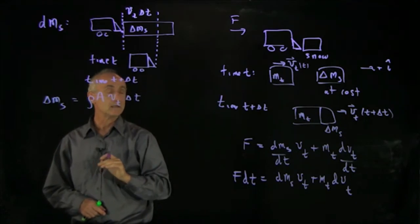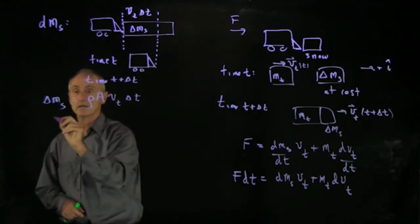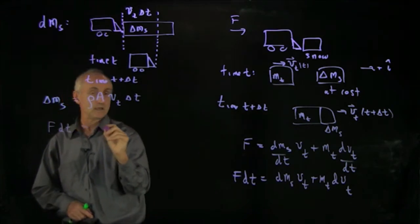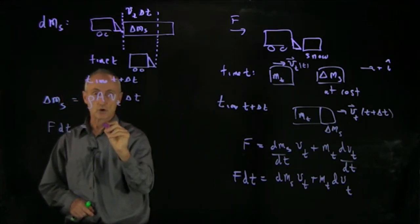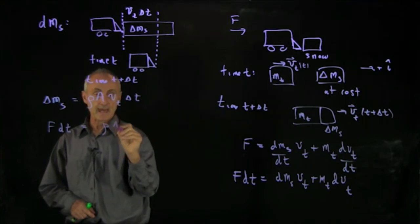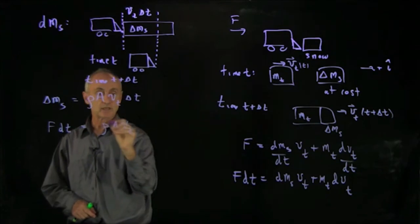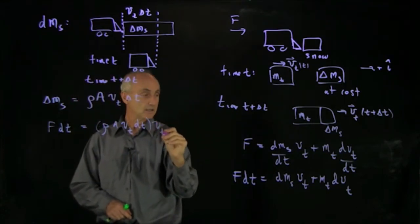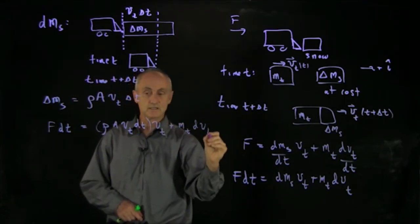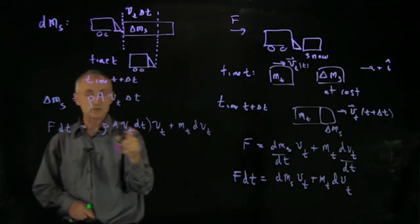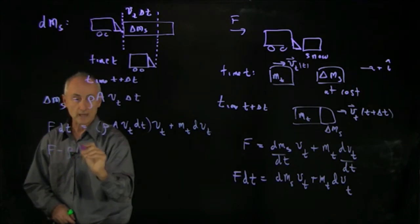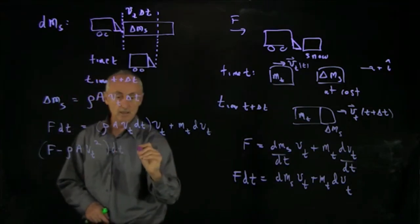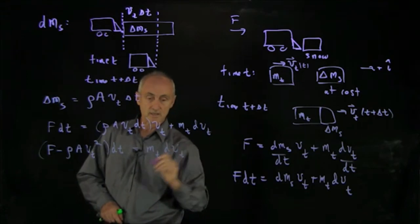And we can write that in the following way, that we see that our differential equation F dt equals dms, which is rho A vt times dt. This will be a small interval. We're taking a limit now, times another vt plus mt dvt. Now, we can bring this term over to the other side. And so we have F minus rho A vt squared times dt equals mass of the truck times dv dt.